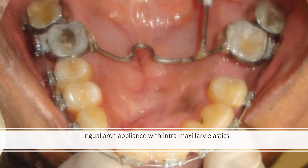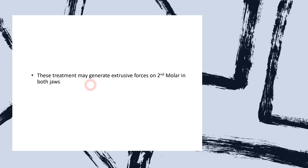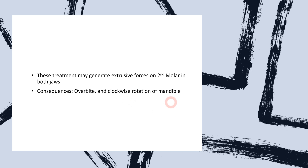The last option is lingual arch appliance with intramaxillary elastics. It is similar to the transpalatal arch placed in the maxillary arch, but when a similar appliance is placed in the mandibular teeth it is called a lingual arch, performing the same function. There are certain points to note when using these appliances: these treatments result in extrusive forces on the second molar in both jaws, so extrusion of the second molars may occur. Use of elastics may also lead to increased overbite and clockwise rotation of the mandible. Patient cooperation is essential for all these treatments.